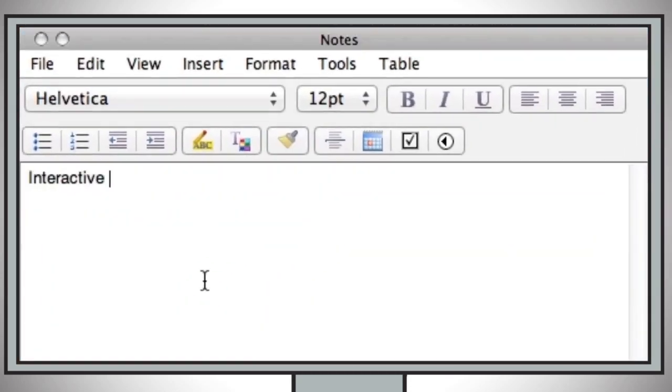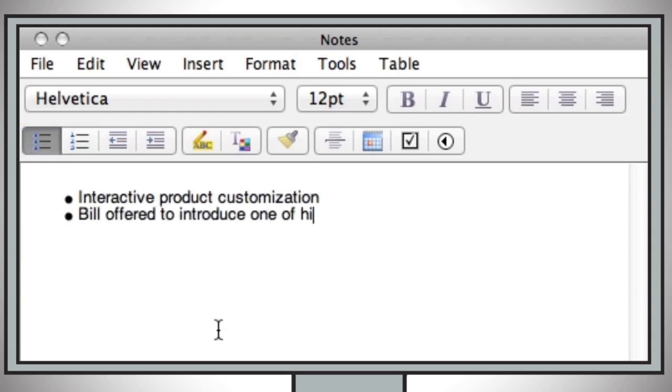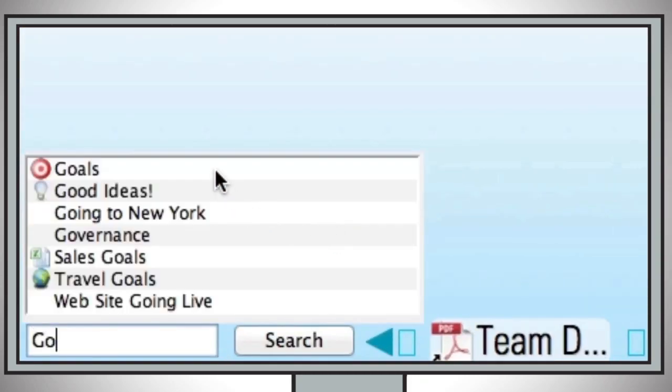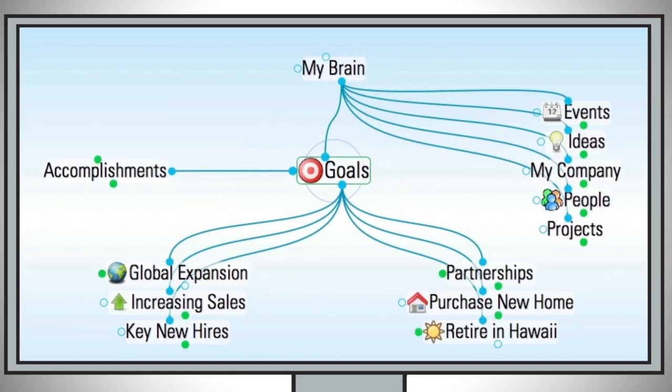Jot down notes and lists to help you remember all those great ideas, or give context to the information in your brain. Finding stuff is easy too. Just type the first few letters of a thought, and all the related information is displayed.